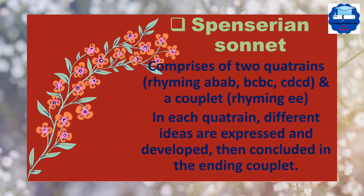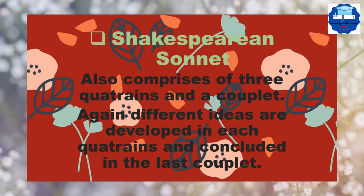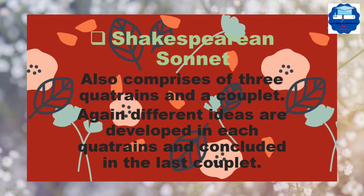Shakespearean or Elizabethan sonnet was named after William Shakespeare. It is also known as Elizabethan sonnet because this sonnet flourished in the Elizabethan period. It composes of three quatrains and a couplet. Different ideas are developed in each quatrain and concluded in the last couplet, just like the Spenserian sonnet.